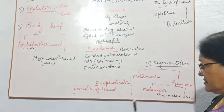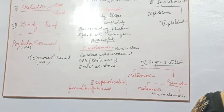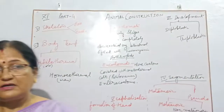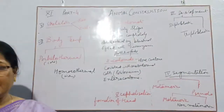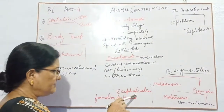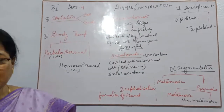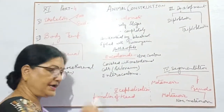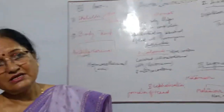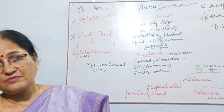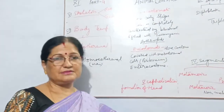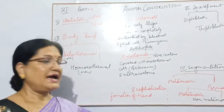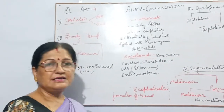Now we come to cephalization. If you have seen a prawn — prawn has head and neck joined together. But in humans, head and neck are not joined. Cephalization means inside the mother's womb, when the young one starts to grow, there is formation of the head. When head formation takes place smoothly and is totally separated from the neck, these organisms have a separate head. Otherwise, head and neck will be fused — this is known as cephalothorax. The process of formation of head is known as cephalization.